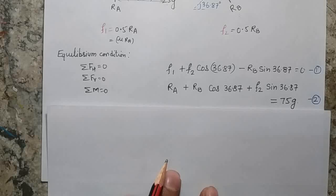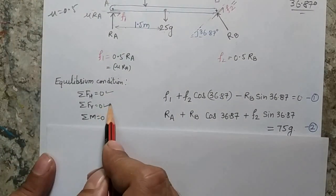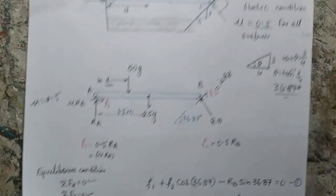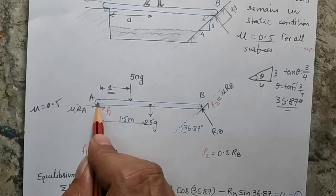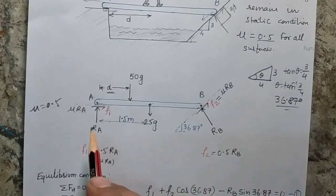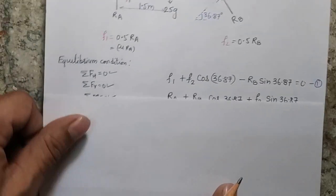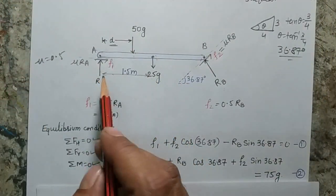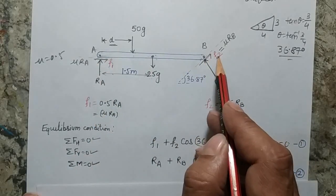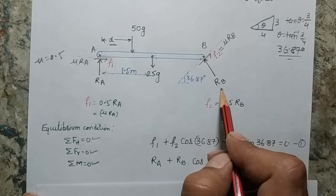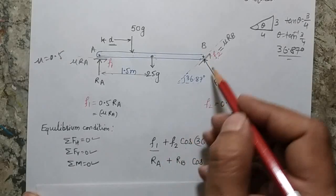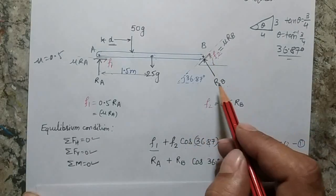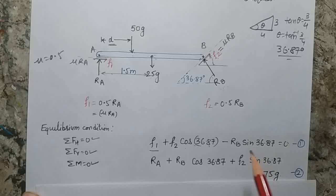With the free body diagram complete, I write the equilibrium equations: horizontal force balance, vertical force balance, and moment balance. I can take moments at any point, but I will take moments at point B. For the horizontal force balance, F1, the horizontal component of F2, and the horizontal component of Rb all contribute. The horizontal equation includes F1, F2·cos(36.87°), and Rb·sin(36.87°). This is the first equation.